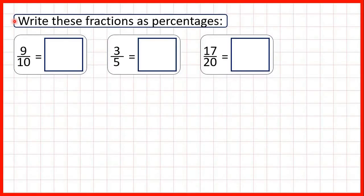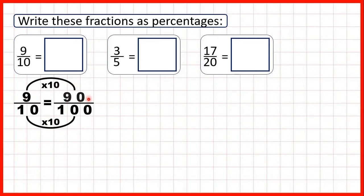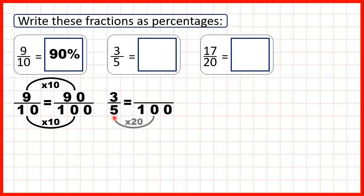We need to write these fractions as percentages. First we have 9 tenths. A percentage is a fraction over a hundred, so we need to find a fraction equivalent to 9 tenths which has a denominator of a hundred. To find equivalent fractions we use multiplication: 10 times 10 is a hundred, and what we do to the denominator we need to do to the numerator as well, and 9 times 10 is 90. So 9 tenths is equivalent to 90 hundredths — that's 90 percent. Now we have three fifths: 5 times 20 is a hundred, and 3 times 20 is 60, so that's 60 percent.